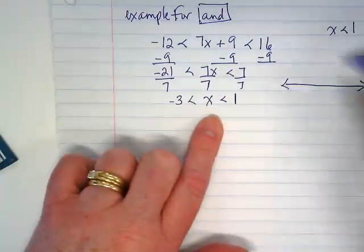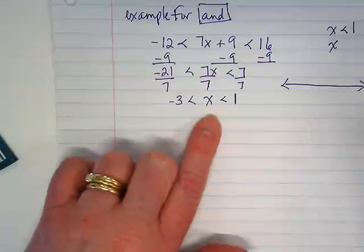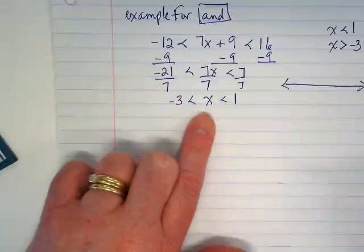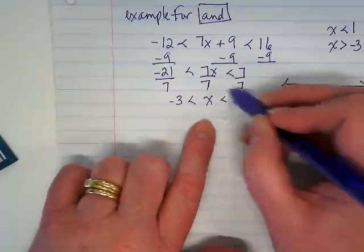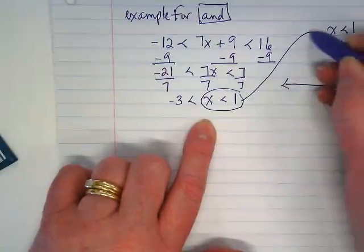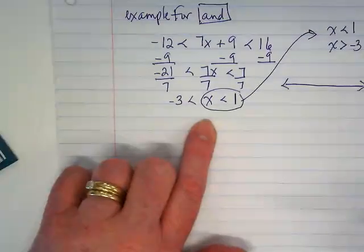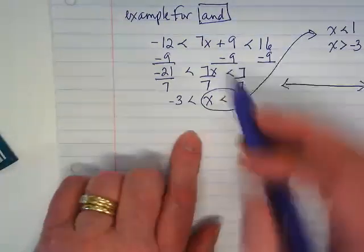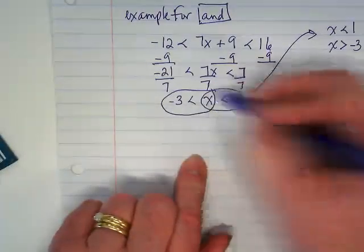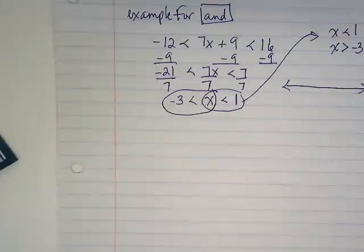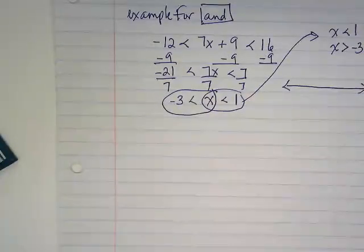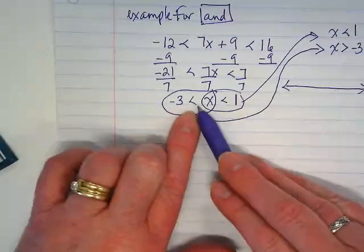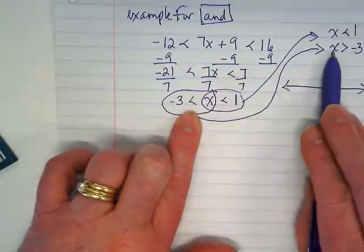I like to graph it by pulling this apart and doing our flip-flop idea where I've got x is less than 1 and x is greater than negative 3. Notice what I did there. I took the right side of the inequality and rewrote it just as it is. This side of the inequality I flipped it. Why? It'll be easier to graph it. Notice what I did to the symbol—it went from less than to greater than.